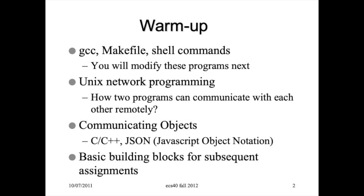Essentially, you have two different programs and the question is how these two programs can communicate with each other remotely - one program may be in Europe, one in Asia. This capability is fundamental for today's internet environment. This work involves Unix network programming, but also pushed into the object-oriented sense, where two objects are communicating and the communication itself is an object being transferred from one process to another.